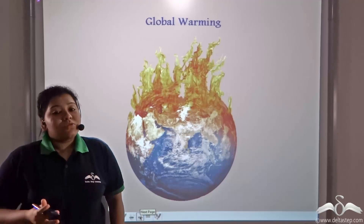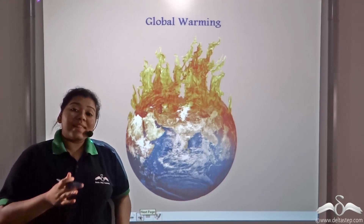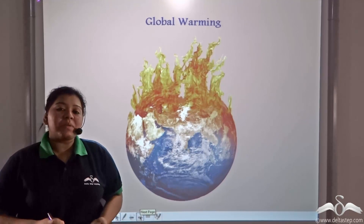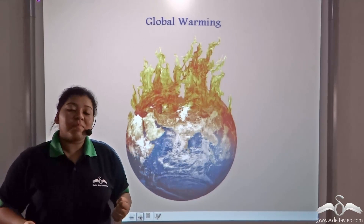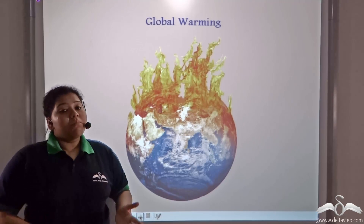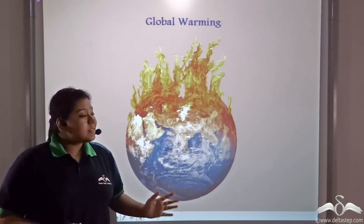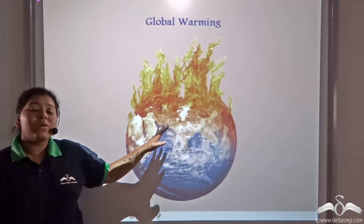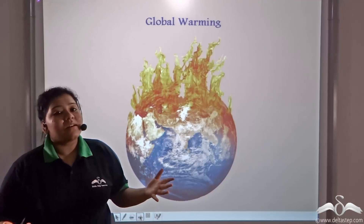Trees take up carbon dioxide for photosynthesis. So a lesser number of trees due to deforestation would mean a lesser amount of carbon dioxide being taken up by the plants, which equals more carbon dioxide present in the atmosphere. This causes global warming because carbon dioxide traps the heat that is reflected by the earth.